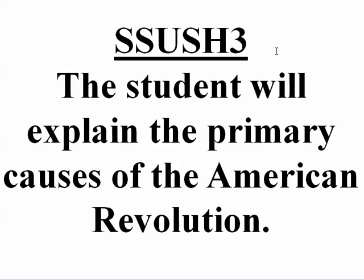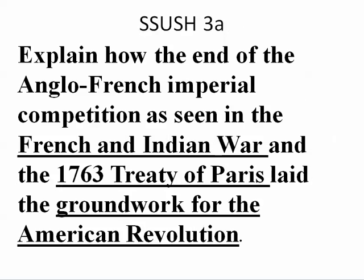Our big overall theme here is explain. You need to explain what the primary causes of the American Revolution are or were. Substandard A: explain how the end of the Anglo-French Imperial Competition, as seen in the French and Indian War and the 1763 Treaty of Paris, laid the groundwork for the American Revolution.